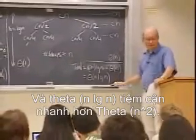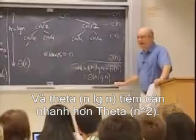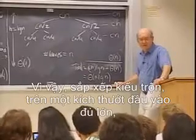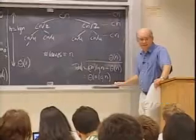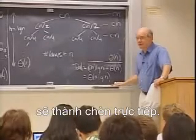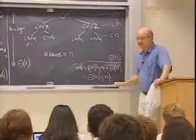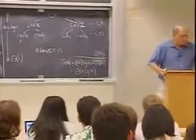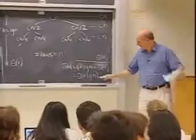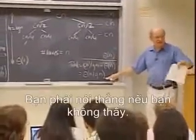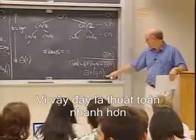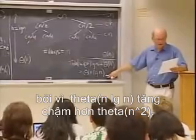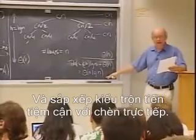Theta of n log n is asymptotically faster than theta n squared. So merge sort on a large enough input size is going to beat insertion sort — merge sort is going to be a faster algorithm. Merge sort asymptotically beats insertion sort.